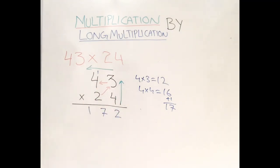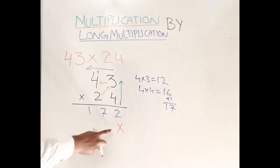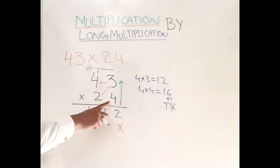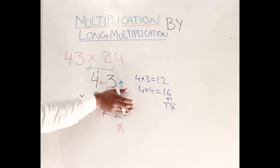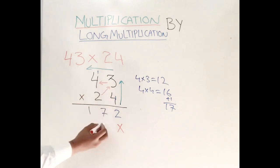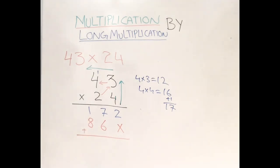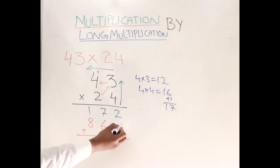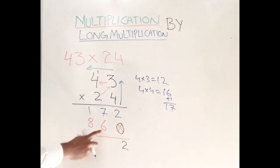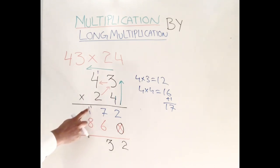For the second row, since we already used the unit digit, we leave one place blank — write a zero there. Now multiply using the tens digit 2. Two times three is six, two times four is eight, giving us 860. Now add both rows: two plus zero is two, seven plus six is thirteen — write three carry one, one plus eight plus one carry is ten. The answer is 1032.